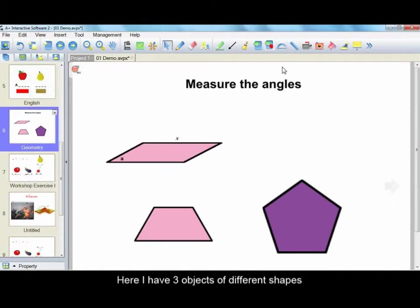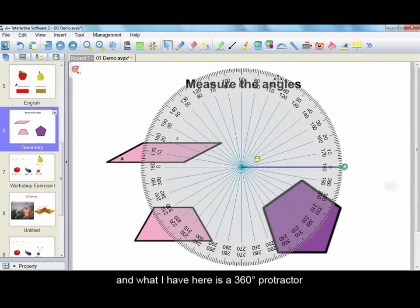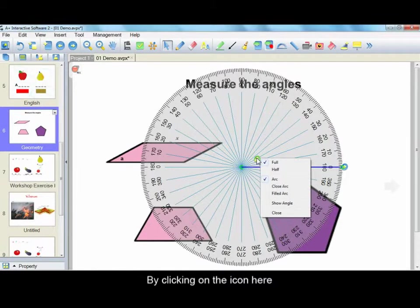Here I have three objects of different shapes. I can use the protractor to measure their angles. So I call the protractor, and what I have here is a 360 degree protractor. By clicking on the icon here, I can change it to a 180 degree protractor.